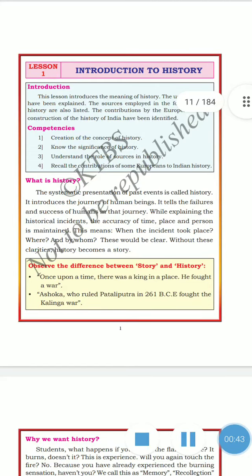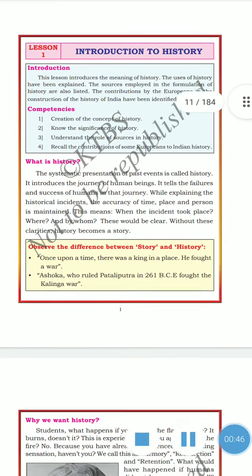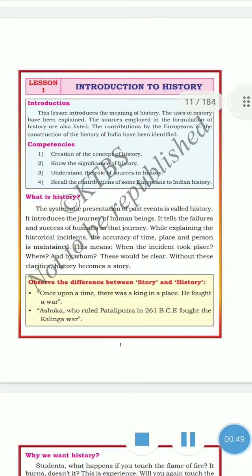So what is history? The systematic study and presentation of past events is called history. It introduces the journey of human beings and tells the failures and successes of humans in that journey. While explaining historical incidents, the accuracy of time, place, and person is maintained — meaning when the incident took place, where, and by whom, this would be clear with clarity.